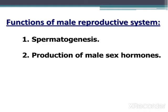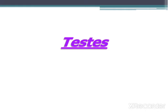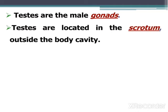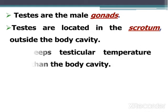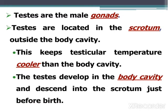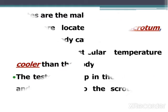Functions of the male reproductive system include spermatogenesis, production of male sex hormones, and the male sexual act. The testes are the male gonads, located in the scrotum outside the body cavity. This keeps the testicular temperature cooler than the body cavity. They develop in the body cavity and descend into the scrotum just before birth.